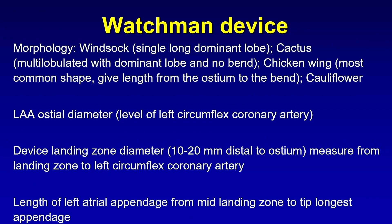Unfortunately, there are numerous things that you should ideally include in a pre-procedural planning CT for placing the Watchman device, ranging from the morphology of the appendage to the left atrial appendage osteal diameter, the landing zone diameter, and the length of the appendage from the mid-landing zone. I personally was having trouble remembering everything I should include, so I decided to create a structured template using a pick list to ensure that all the information was included.